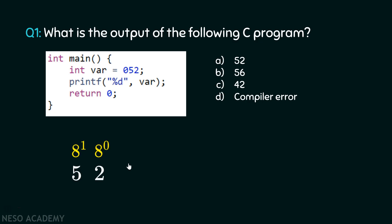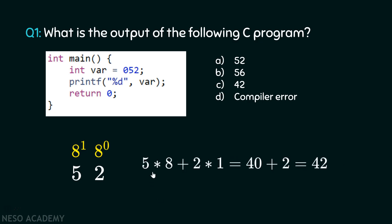We know that the base of an octal number is 8. Therefore, the place value starts from 8 raised to the power 0, then 8 raised to the power 1, then 8 raised to the power 2, and so on. Here we need to multiply 8 raised to the power 0 by 2, and 8 raised to the power 1 by 5, and then simply add the result. 5 is multiplied with 8 which gives us 40; 2 is multiplied with 1 which gives us 2. Then we add these two values together, which gives us the answer 42.